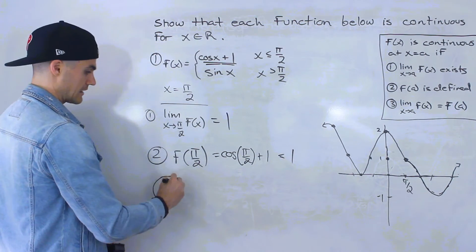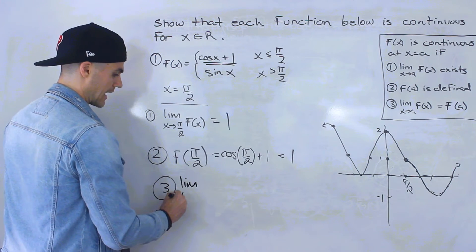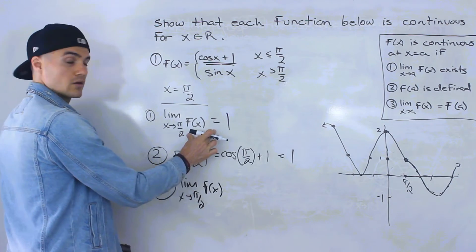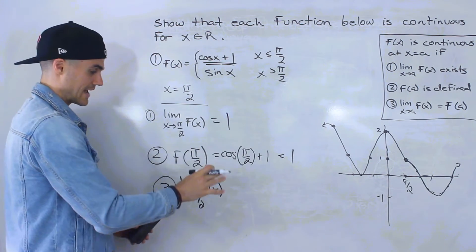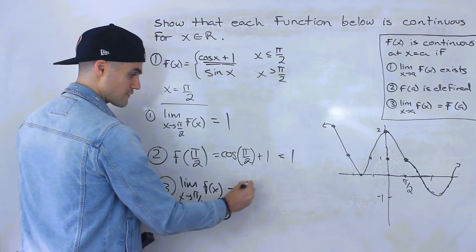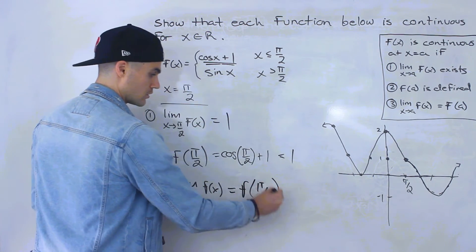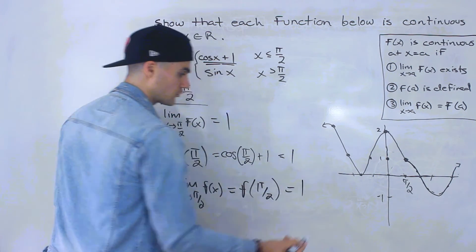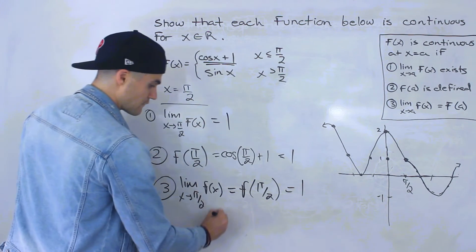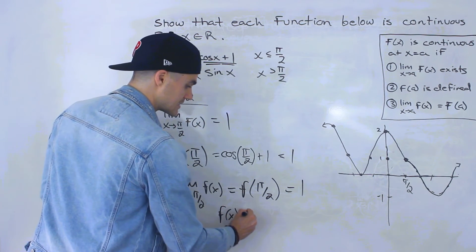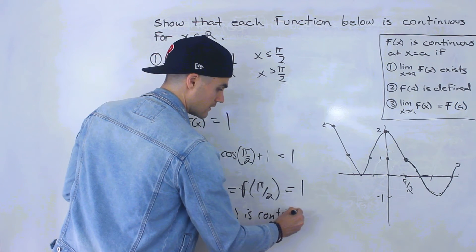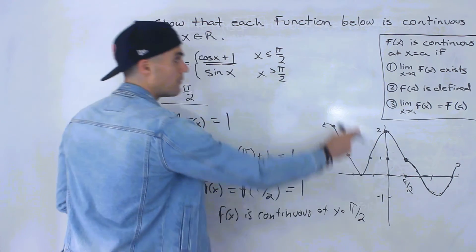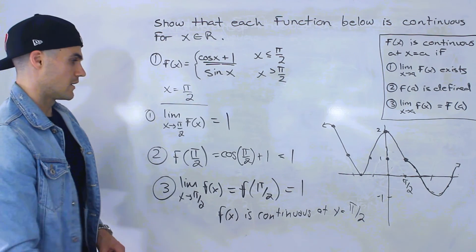So we've shown f(π/2) is defined and equals one. Since the limit as x approaches π/2 of f(x) — found in condition one — equals f(π/2) found in condition two, and both equal one, it means f(x) is continuous at x = π/2 by the definition of continuity.